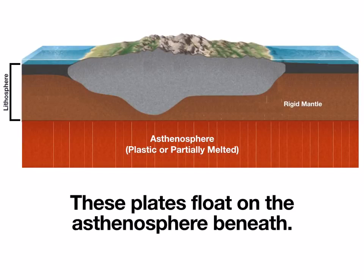Now, that crust — whether it's oceanic or continental — along with this orangey section called the rigid mantle, those two together are what make up our lithosphere, this solid outer shell of the earth. Keep in mind that beneath that is a gooey, plastic, partially melted bubblegum layer called the asthenosphere. The plates that we live on are actually floating on the asthenosphere beneath.